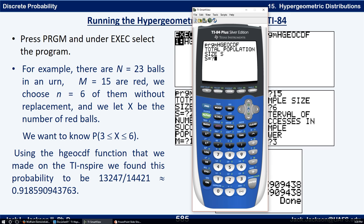So it's hypergeometric. If we did it with replacement, it would be binomial distribution. And here we let X be the number of red balls. We want to know the probability that X is between three and six. So the size of the population is capital N, 23. And in the program it's S. So that's 23.